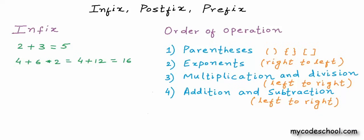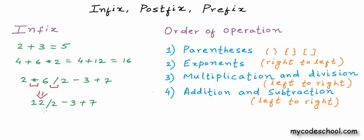Let me take a more complex expression to make things further clear. This expression has 4 operators: 1 multiplication, 1 division, 1 subtraction, and 1 addition. Multiplication and division have higher precedence, so between these two we pick the left one first. We first reduce using the multiplication, then perform the division, and then with only subtraction and addition remaining we go from left to right to get the final result.